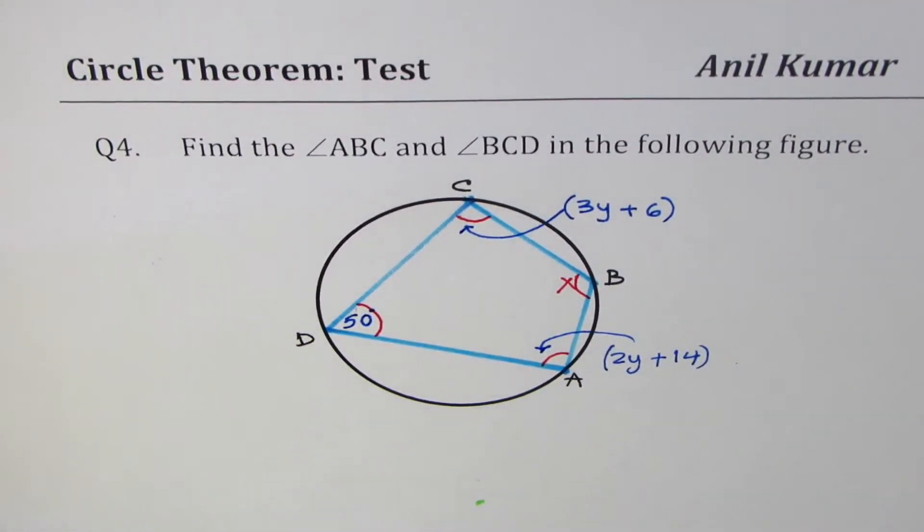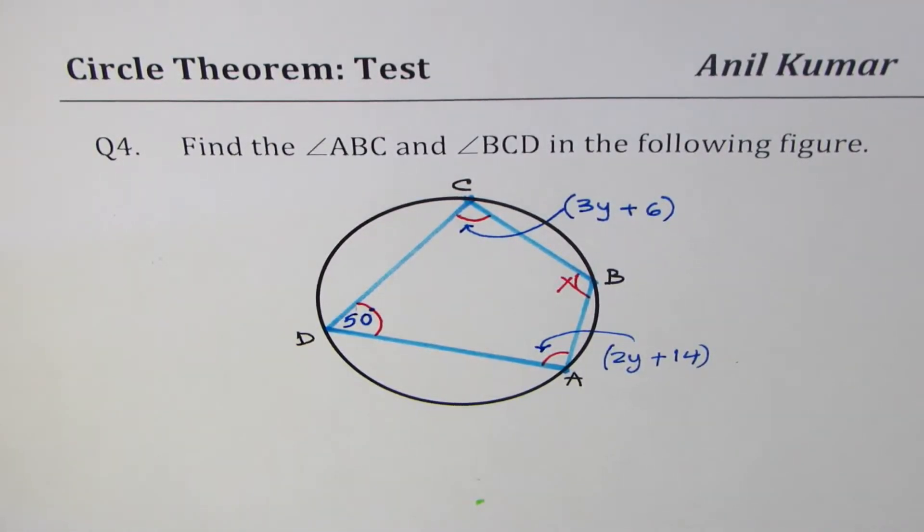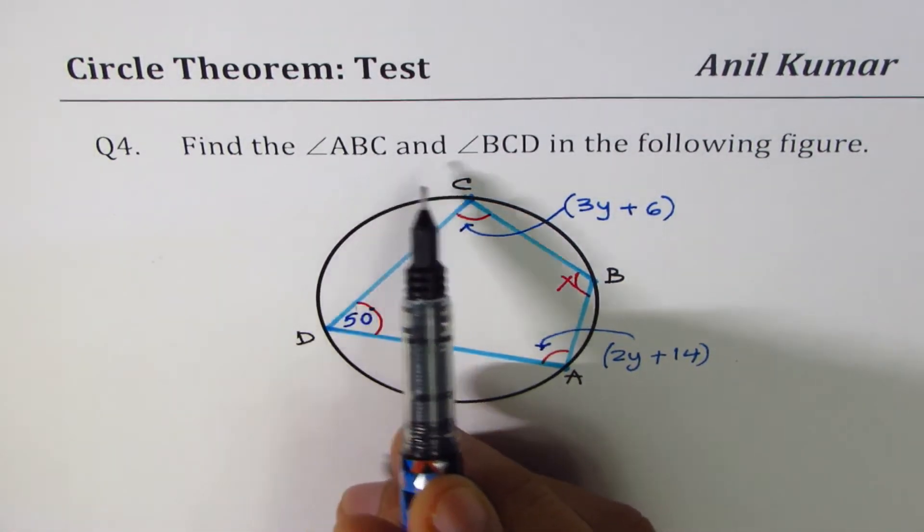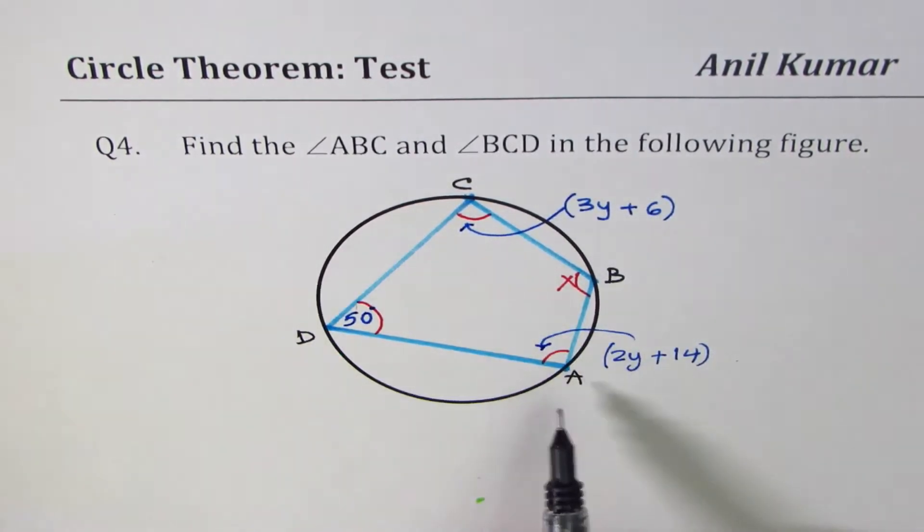I'm Anil Kumar sharing with you a test question based on circle theorem. Question number four. Find the angle ABC and angle BCD in the following figure.